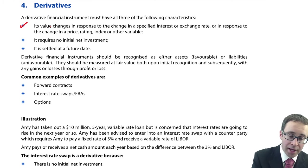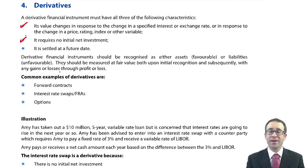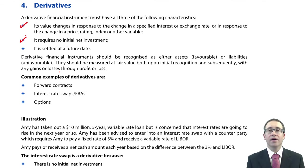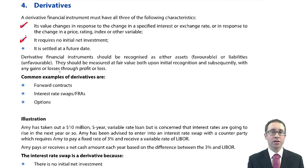The second important characteristic of a derivative is that it requires no initial net investment, or only a very small investment. You can get a futures contract on oranges for a very minimal amount — you just need to sign up to the contract and pay a small fee at the start, but in terms of the overall value of the futures contract, that would be regarded as negligible.